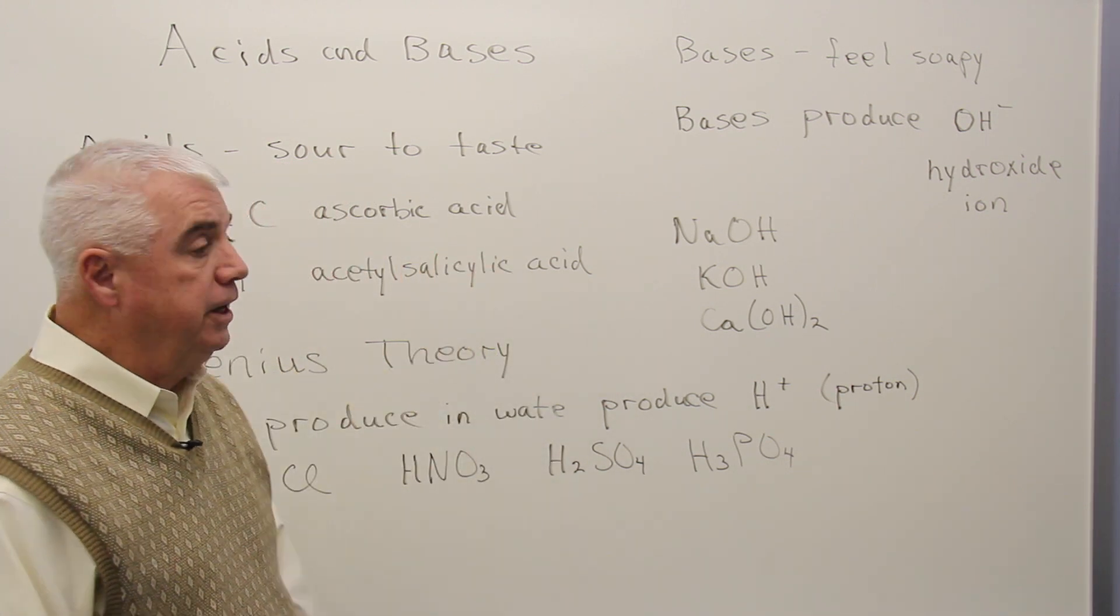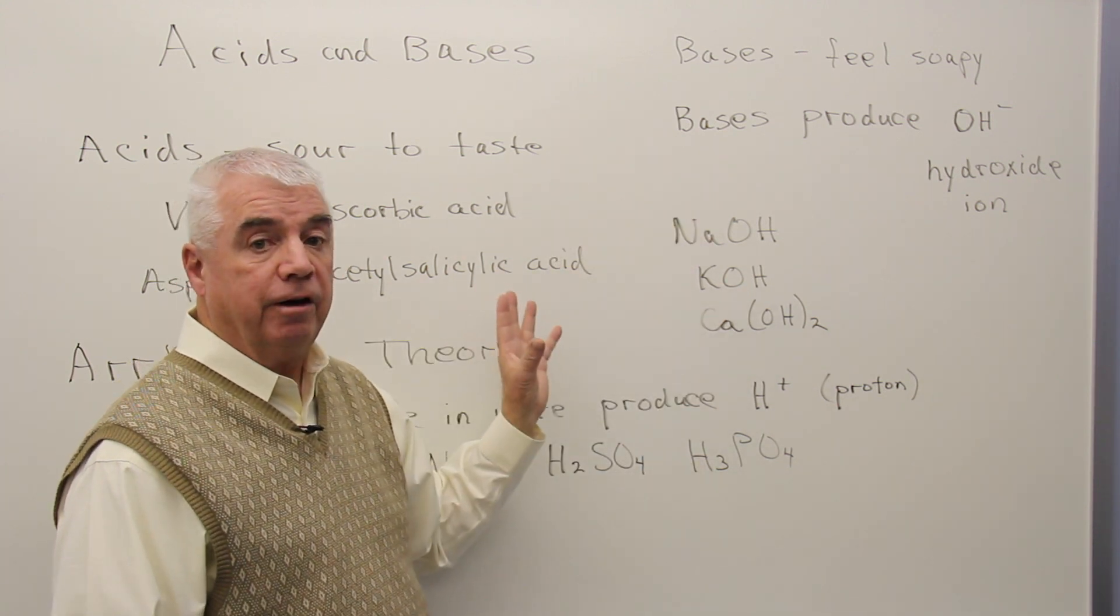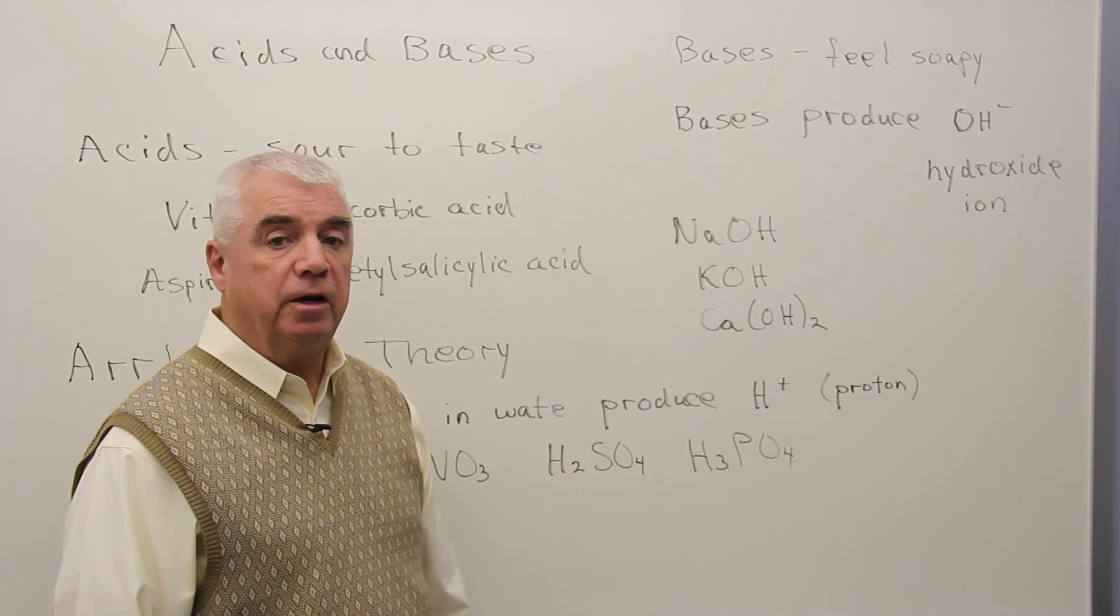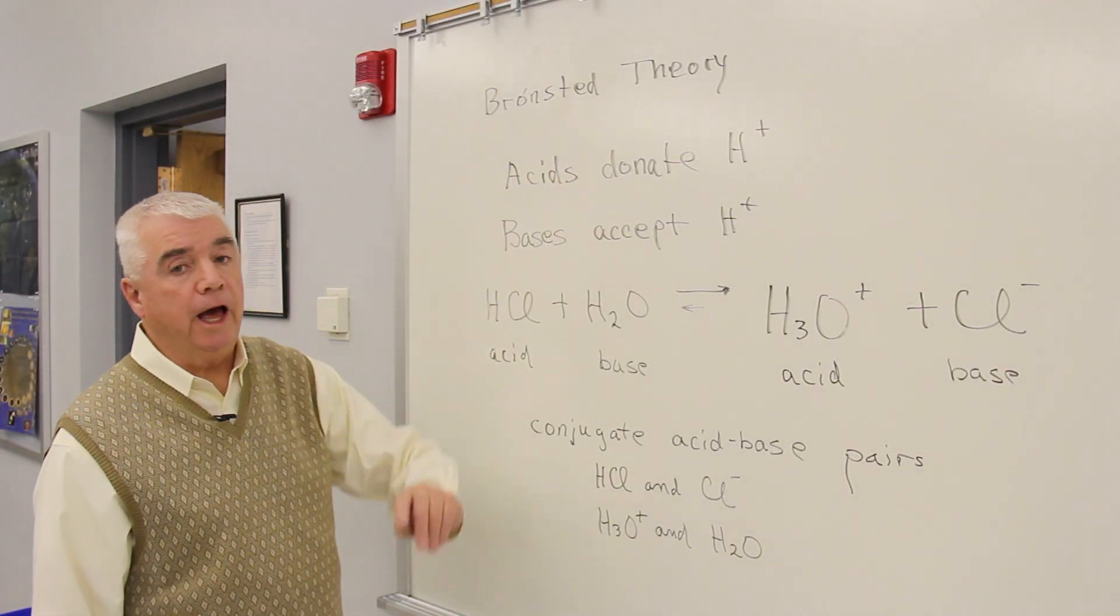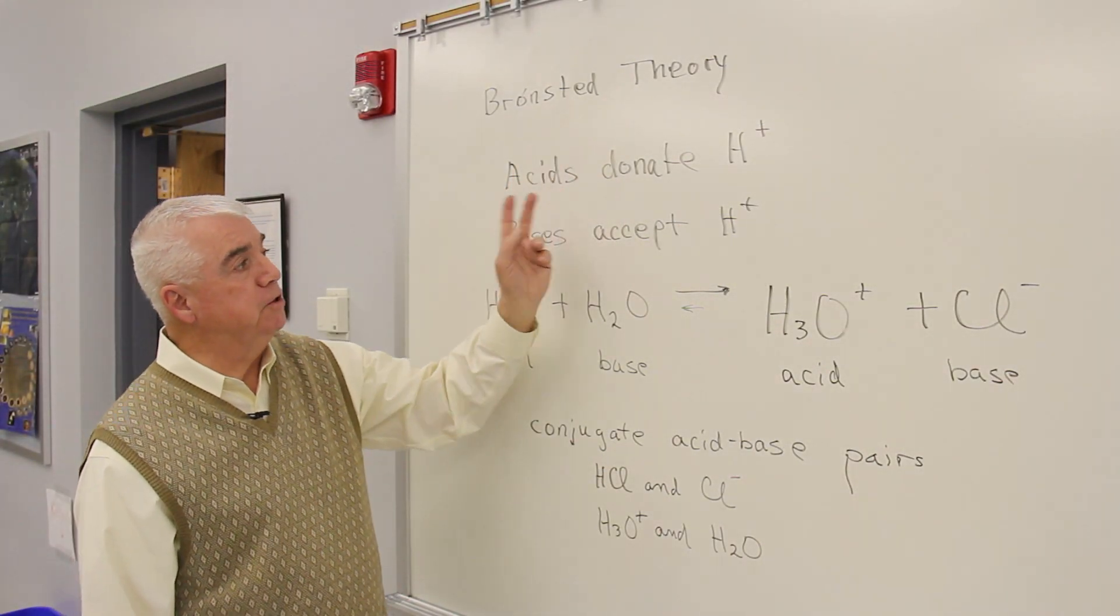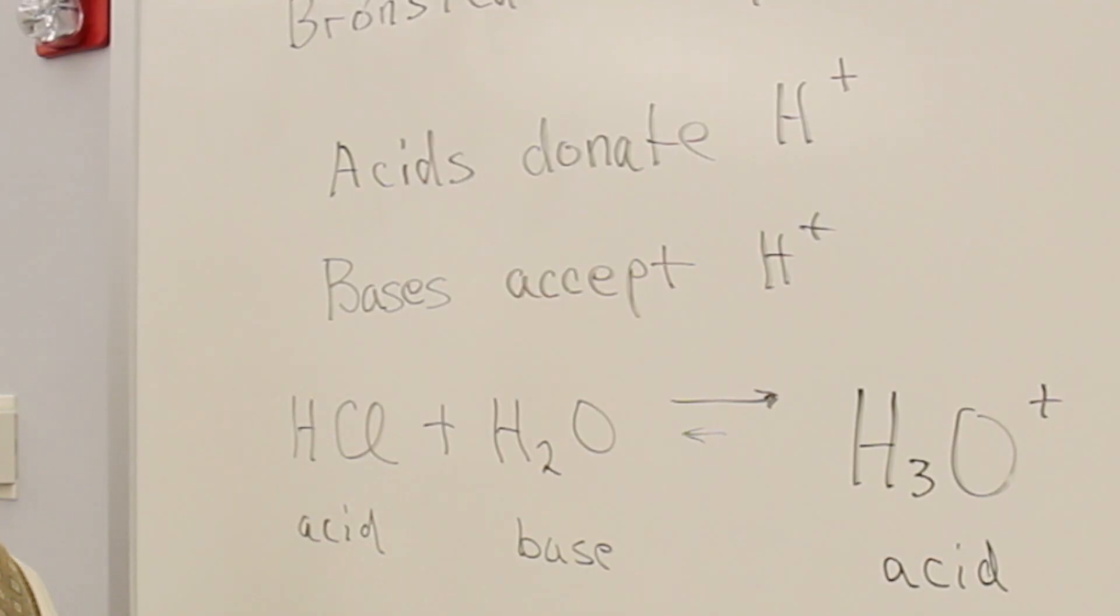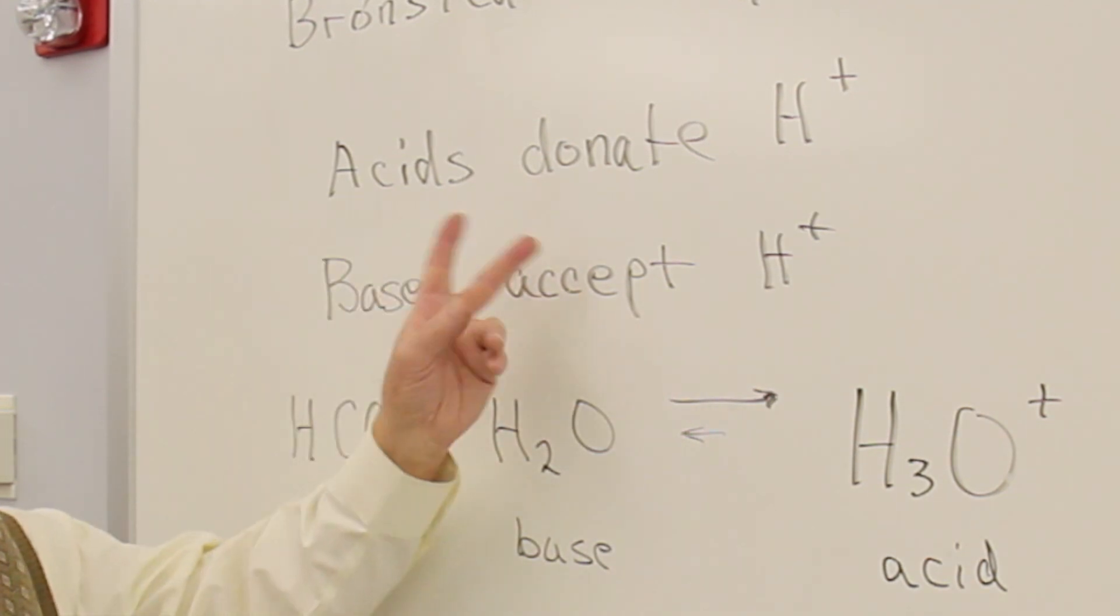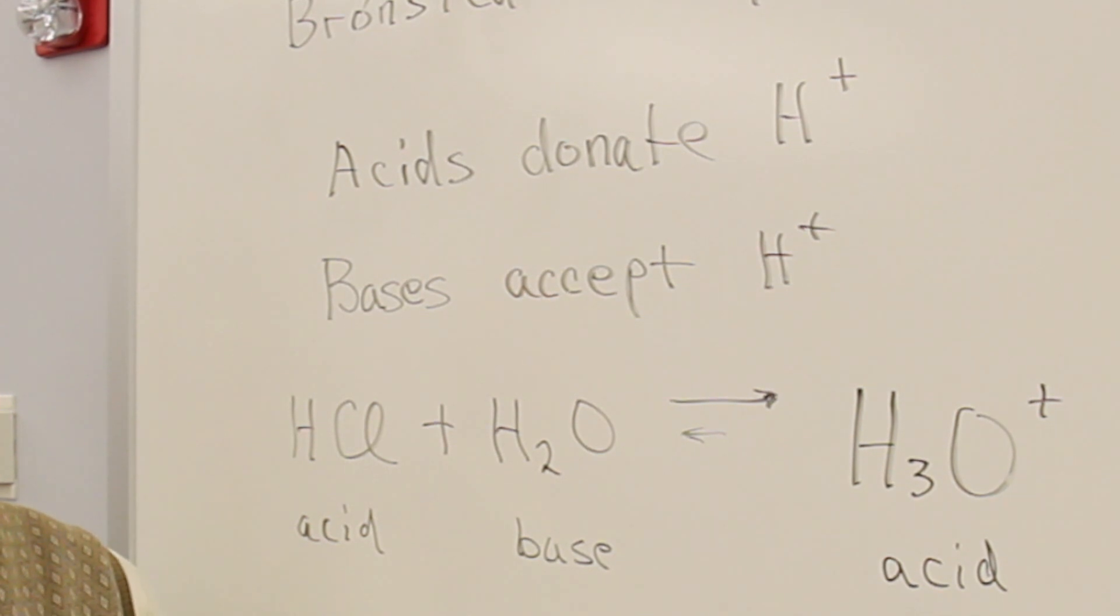Following Arrhenius's work, Bronsted came along with a little broader theory of acids and bases. In the Bronsted theory, acids are donors of protons, H+ ions, and bases accept H+ ions. So in an acid-base reaction, according to the Bronsted theory, all we really have is a transfer of a proton.